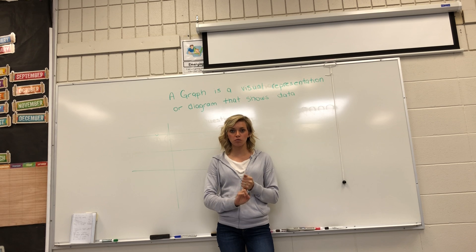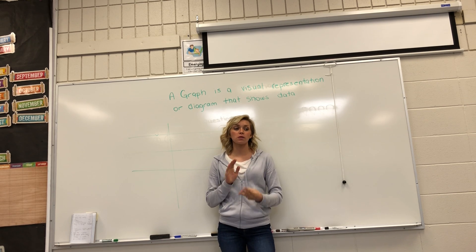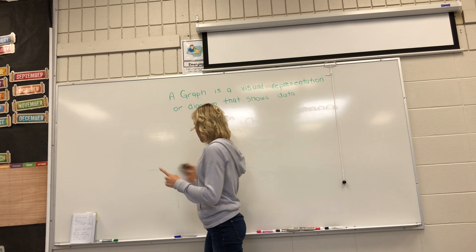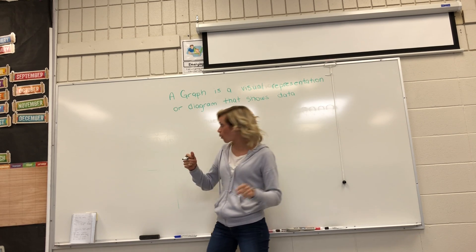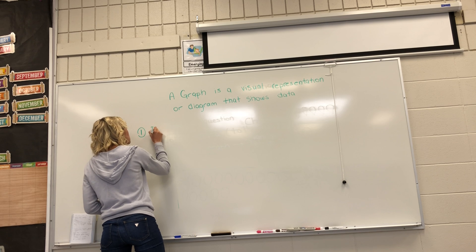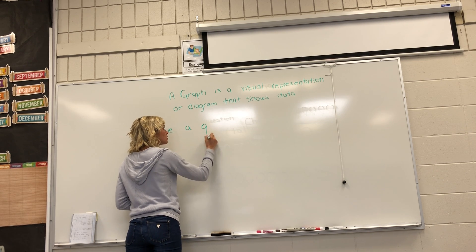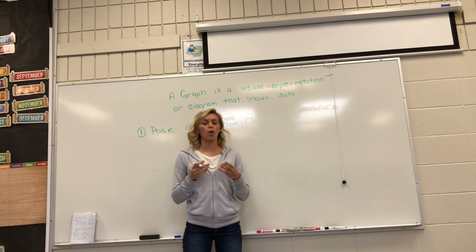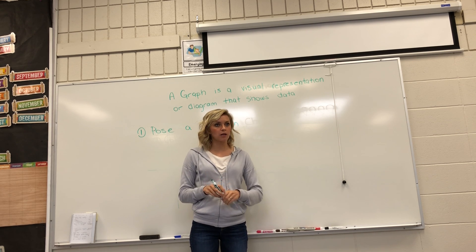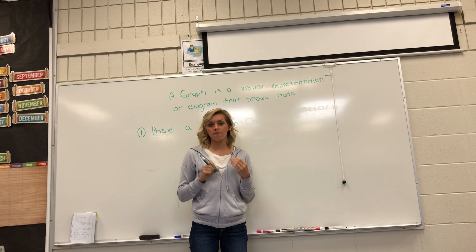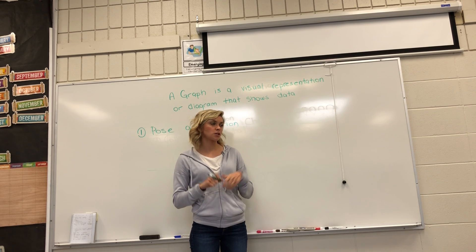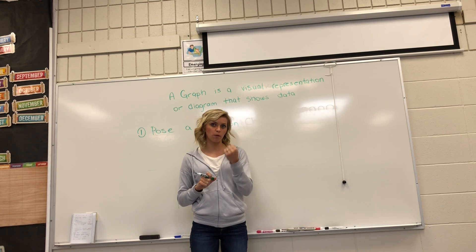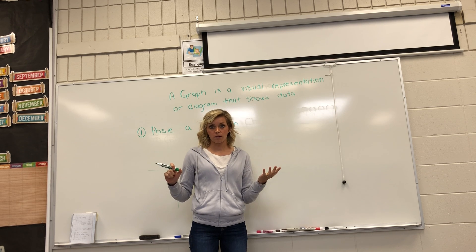Today I want you to come up and do the first three steps in making a graph. So let's review them together. The first thing you're going to have to do is pose a question — come up with a question you want to ask your family. For example, you could ask what is their favorite sport: soccer, football, baseball, or basketball. Those could be your four options, and then you would draw the ball for each sport.